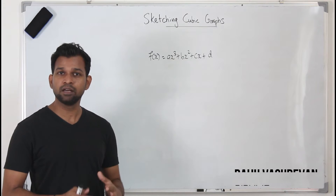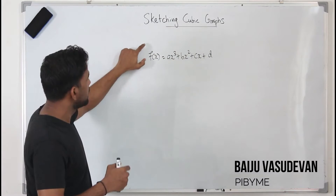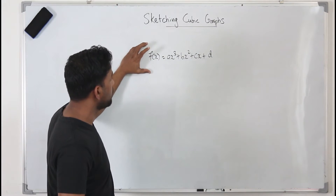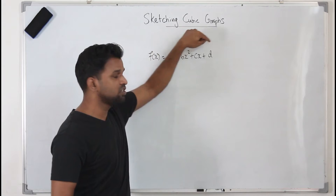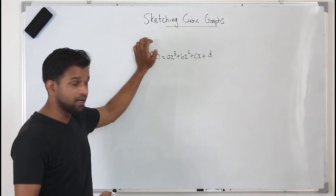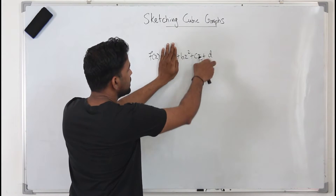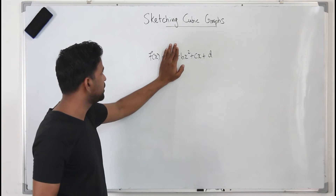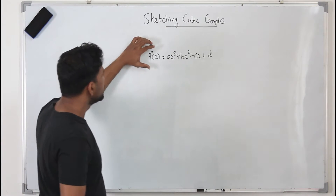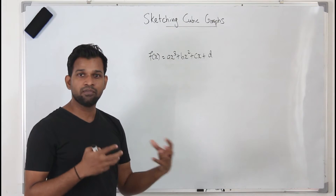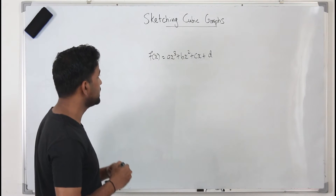Hi everyone, this is Bhaiju Vasudevan. Welcome to my channel Pi by Me. Today's topic is sketching cubic graphs. The general form of a cubic function is ax³ + bx² + cx + d, where a, b, c, d are real numbers. Importantly, a cannot be zero — if a is zero, the function becomes quadratic, not cubic. So a cannot be zero; b, c, d can take any real values.